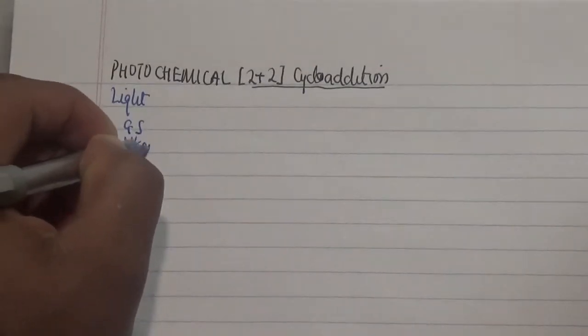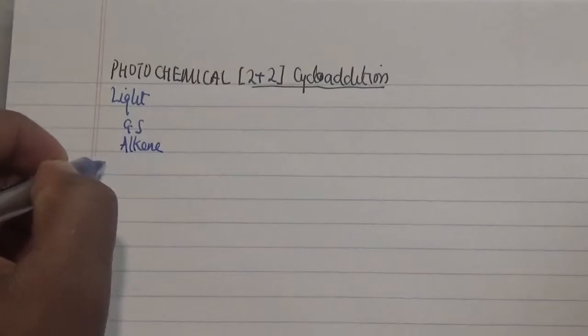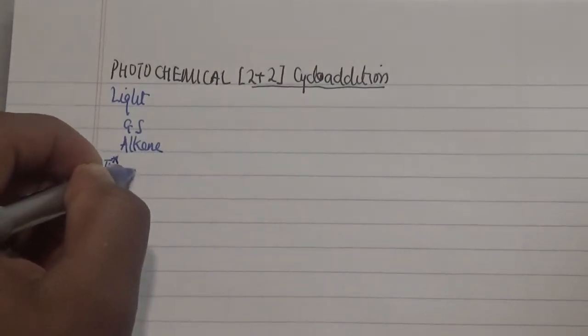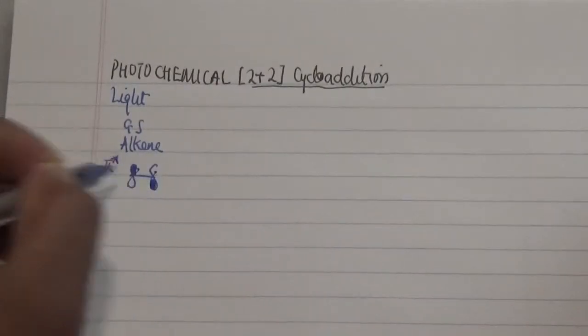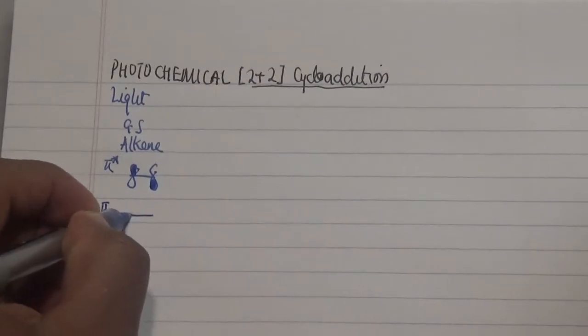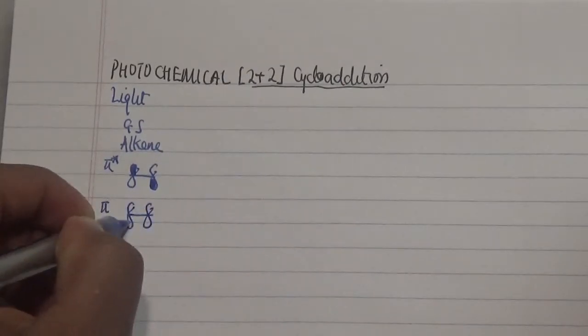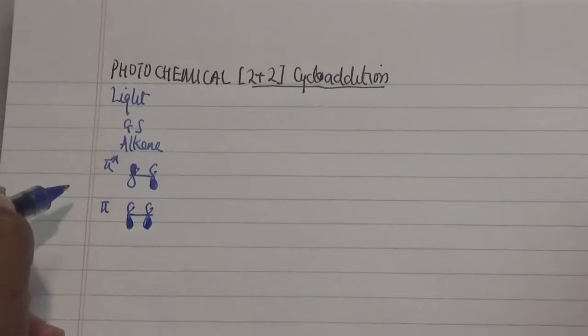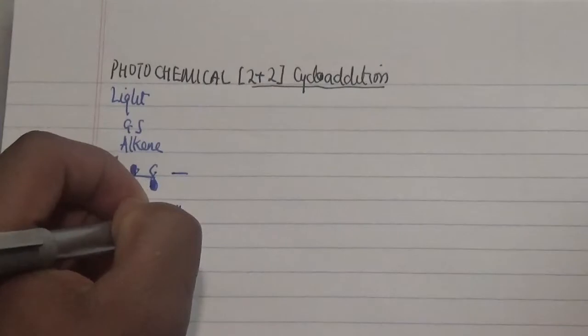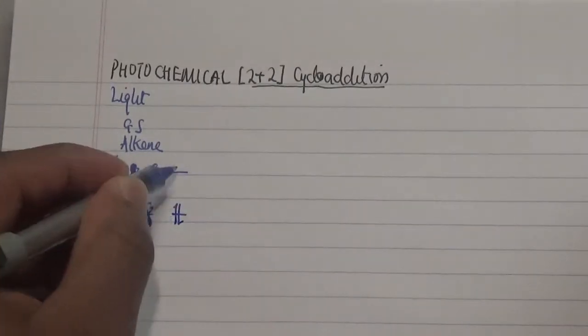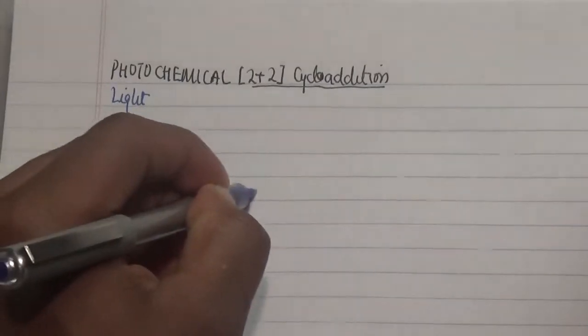This works by converting one of our atoms into the excited state by a photochemical process. For example, we have our ground state where we look at our specific alkene. What we have is this π* where we look at the LUMO state compared to that of the π which is the HOMO state.